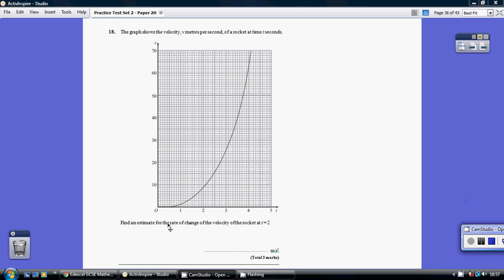We're being asked to find an estimate for the rate of change of the velocity of the rocket at t equals 2. So when t equals 2 is here. Now the rate of change of the velocity is the slope of the velocity. It's the gradient of this slope at this point.